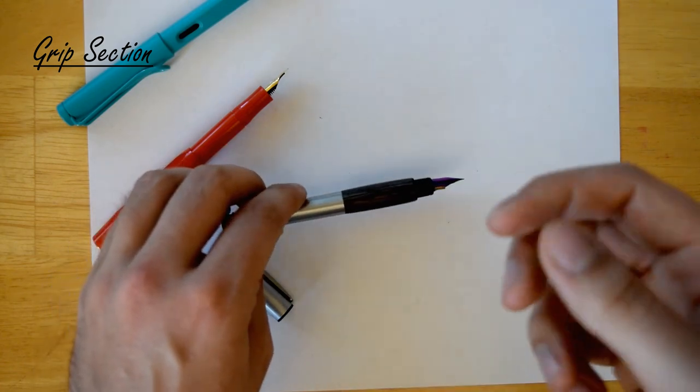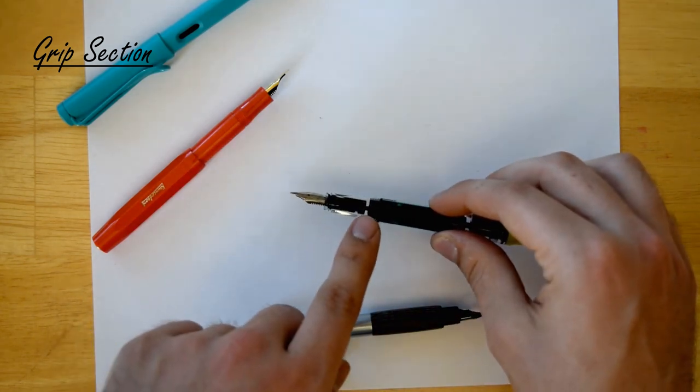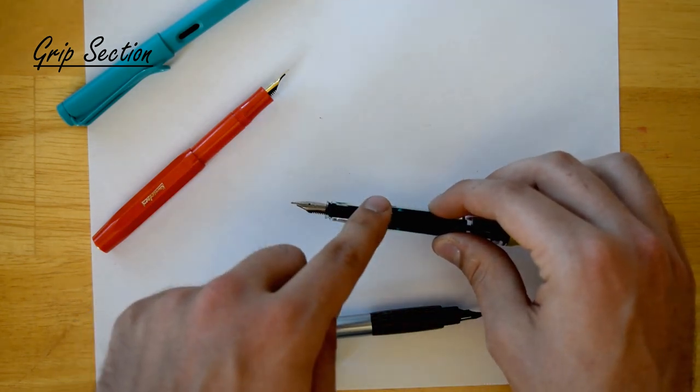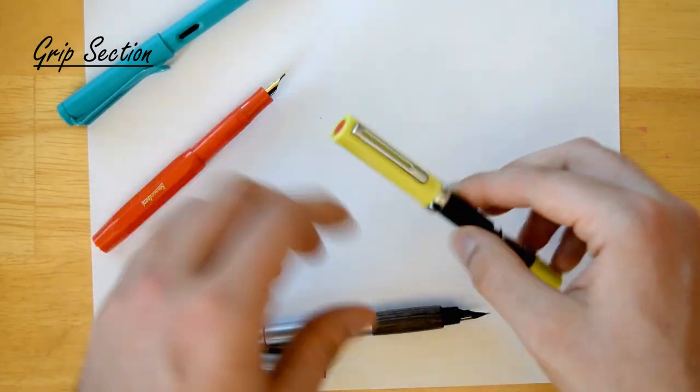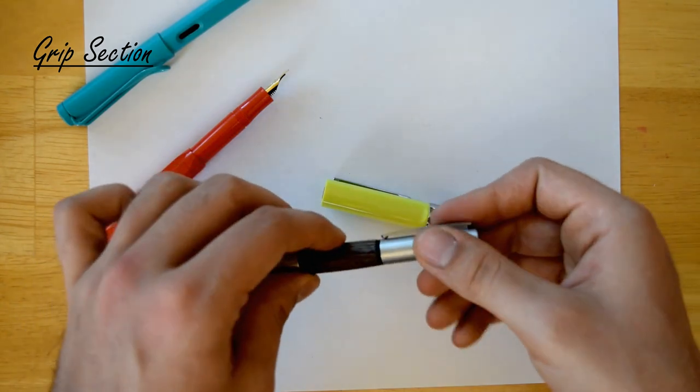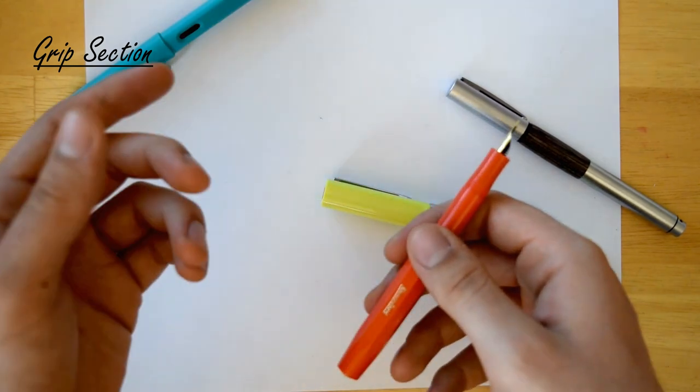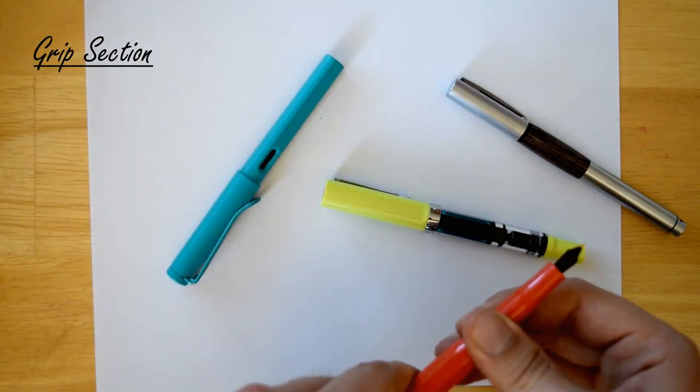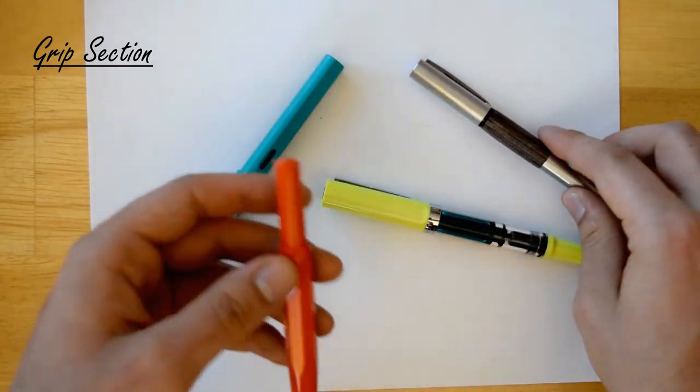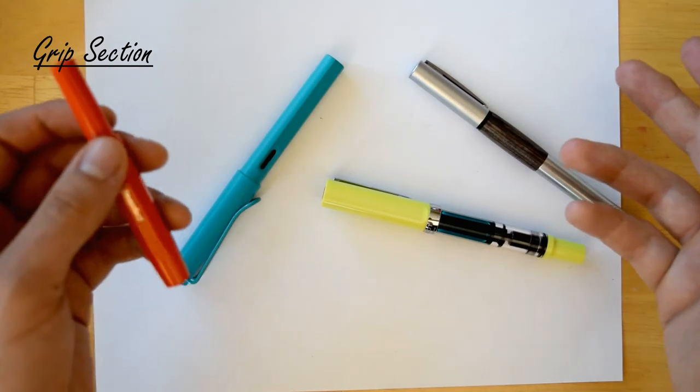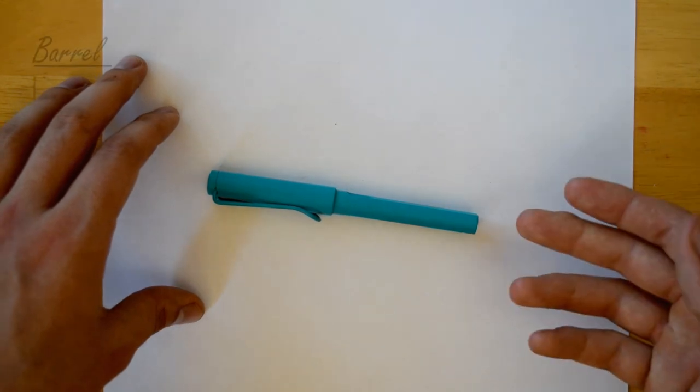You also have circular straight, for example on this Twsbi Eco - it is circular and just straight, there's no concave or convex shape to it. The best type of grip really depends on how and where you hold onto your pens. Myself, I prefer the circular ones, but I know some people will prefer the triangular ones. Depending on the pen, the grip might be made out of wood, plastic, acrylic, macrolon, brass - there's a whole range of materials.